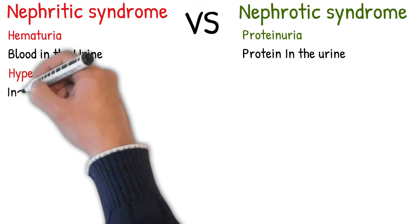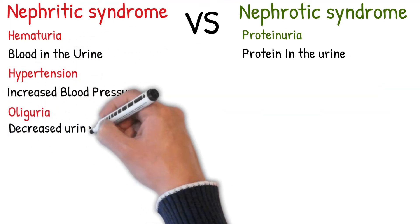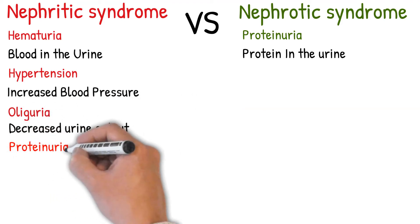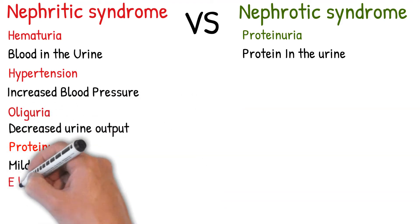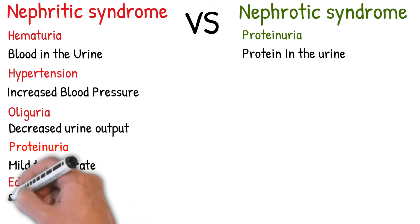Other symptoms of nephritic syndrome: high blood pressure (hypertension), decreased urine output less than 400 ml/day (oliguria), red blood cell casts, pyuria, mild to moderate proteinuria, and swelling of the hands, feet, and/or face.